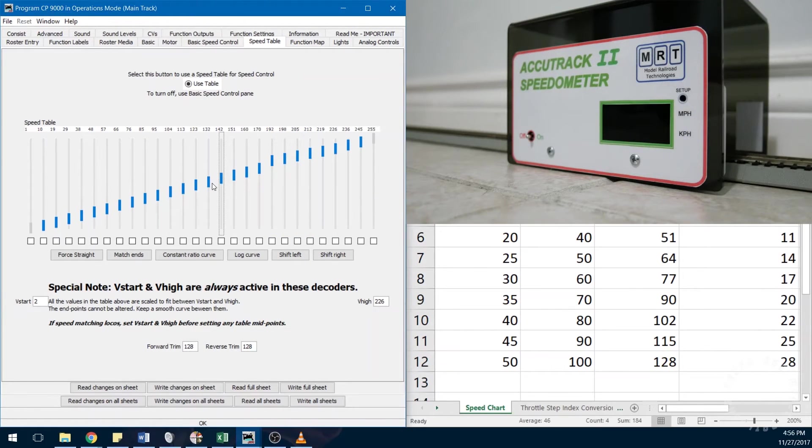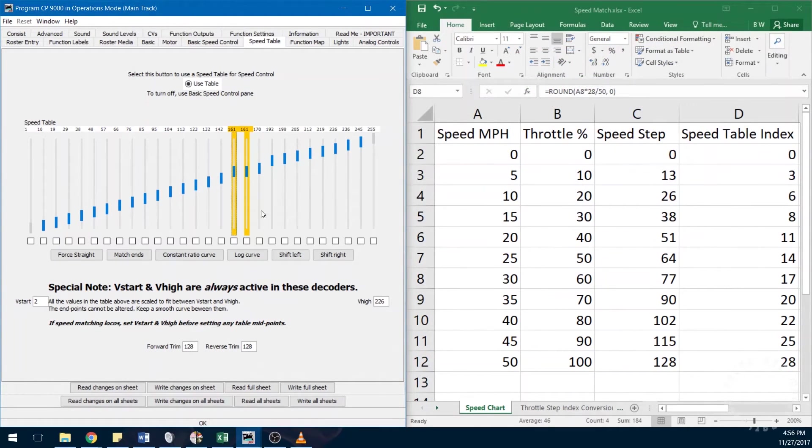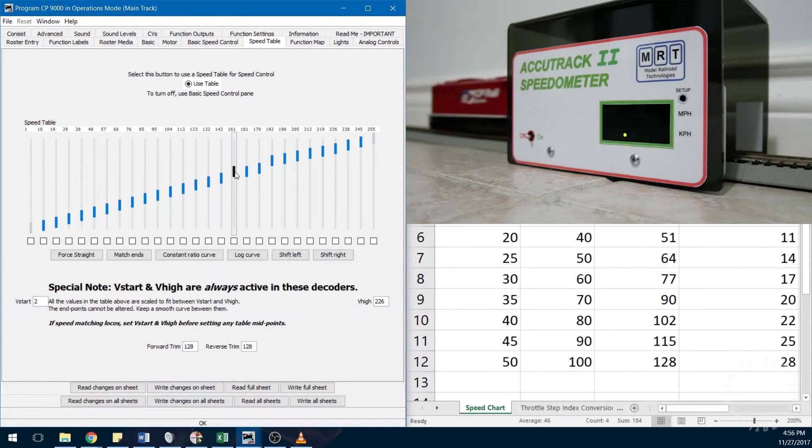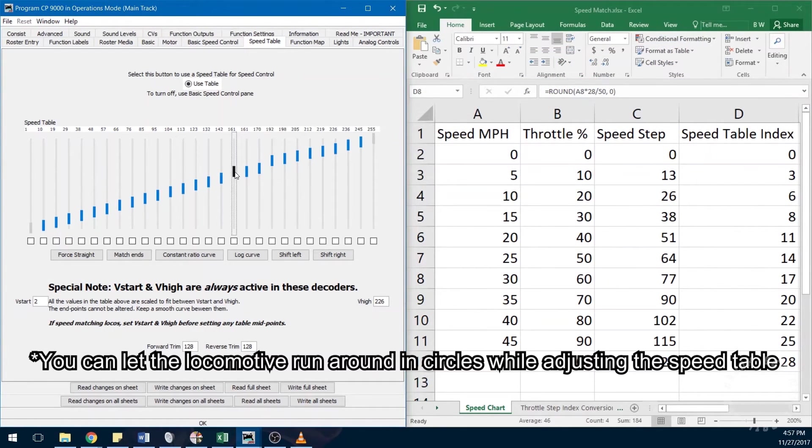Moving on to 60%, the locomotive only moves at 26 instead of 30 scale miles per hour, so I am going to increase the corresponding indices, which is 16, 17, and 18, until it hits 30 miles per hour. The good thing about programming on the main is that you can write these speed indices while the locomotive is still moving and get immediate feedback about the changes in speed that you just made.